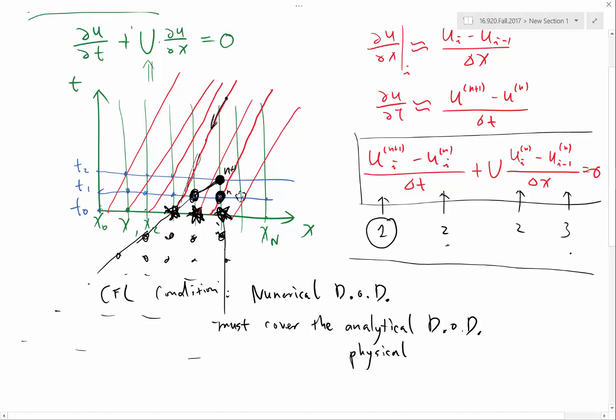So this is the numerical domain of dependence of this point. And the CFL condition says that this triangle must include this ray, which is the physical or analytical domain of dependence.